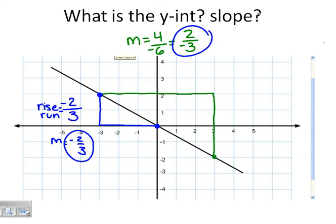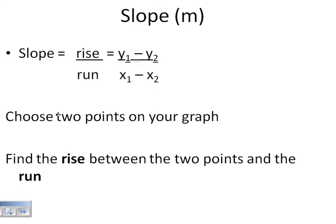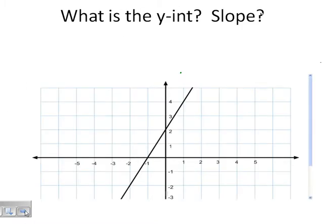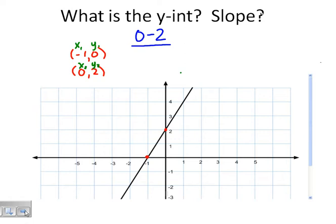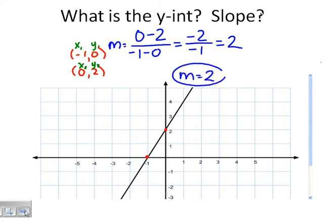Now let's look at the same problems but use our formula, using the coordinates of each point. We have points (-1, 0) and (0, 2). Labeling x1, y1, x2, y2, we write: (0 minus 2) divided by (negative 1 minus 0), which gives negative 2 divided by negative 1, which is 2. So our slope m equals 2 — just like we got when counting rise 2 over run 1.